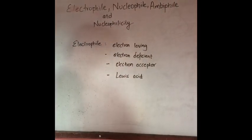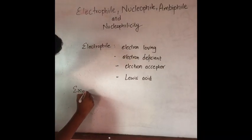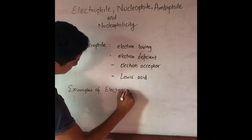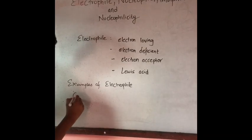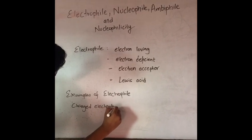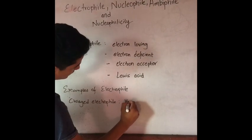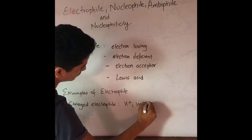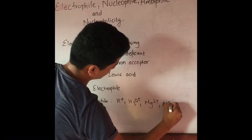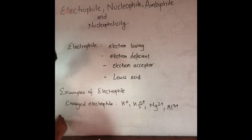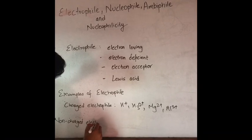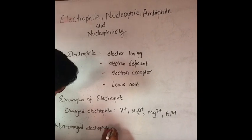For example, charged electrophiles — all positive charges are charged electrophiles: H+, H3O+, Mg2+, Al3+. These are all charged electrophiles. Non-charged electrophile — non-charged electrophile.